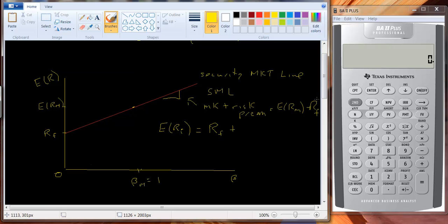So our equation for the line is going to be the expected return for stock I equals the risk-free rate plus beta I, times the expected return of the market minus the risk-free rate. And the beauty of this line, this equation, is that in equilibrium, everything should lie on the line.